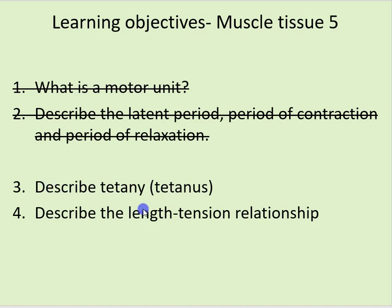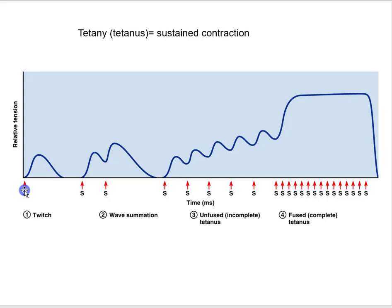We left off describing tetany or tetanus. We talked about how a single stimulus produces an increase in tension with a latent period, period of contraction, and period of relaxation. To get sustained contraction you have to stimulate the muscle again, which leads to an increase in calcium ion concentration in the sarcoplasm — the cytoplasm of the skeletal muscle fiber — until with repeated stimuli you get maximum tension.